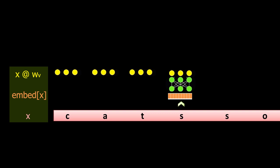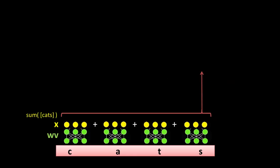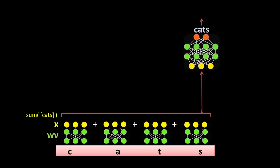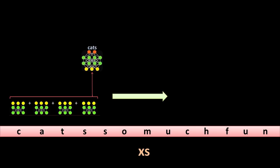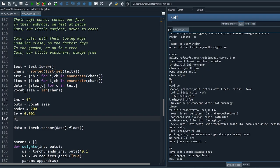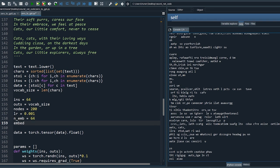Putting this all together: embed each letter into its corresponding vector, pass the embedding through a simple linear network and record the output, then move the filter and do the same for the next letter in the context. Sum all the outputs and pass the result through a nonlinear neural network. The output of that network will be used to predict the next letter. Hopefully now this network can learn to recognize patterns regardless of their position.